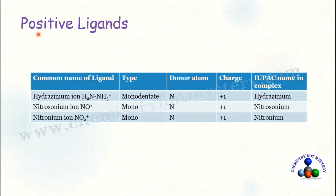Here is a list of positive ligands. For the IUPAC name of a positive ligand, there is no change in the name of the ligand. For example, hydrogenium ion when acting as a ligand retains its name as 'hydrogenium.' For nitrosonium, the name remains 'nitrosonium' in IUPAC as well. For IUPAC naming of coordination compounds, you must remember the type of ligand, their charge, donor atom, dentacy, and IUPAC name.